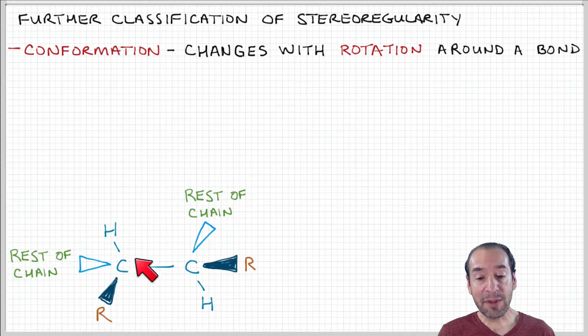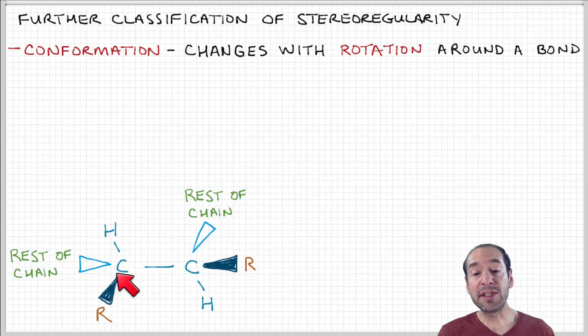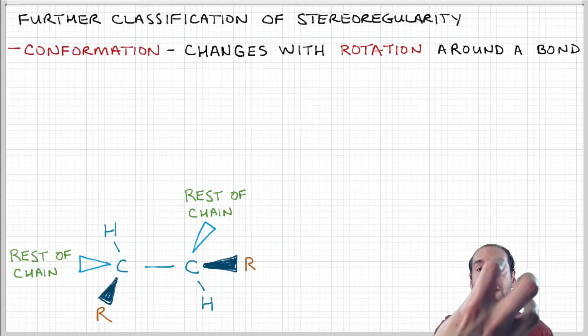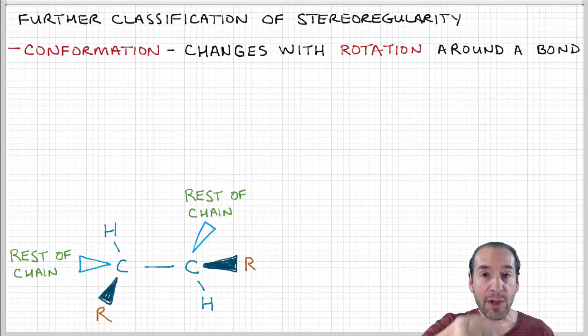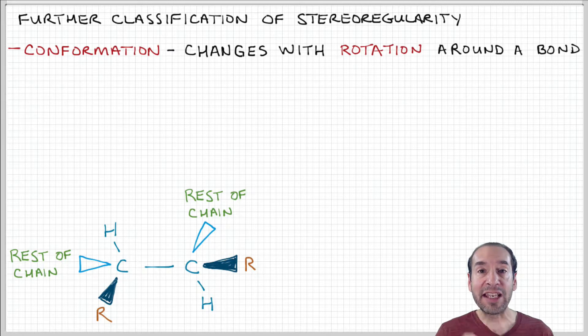And if you remember from chemistry class, we can indicate these three-dimensional features using these triangle-like symbols. So remember, the filled-in triangle represents a bond that's sort of coming toward you out of the page. And an open triangle represents a bond that's going into the page. And then these solid lines are in the plane of the page.